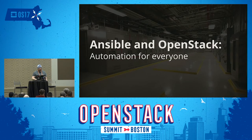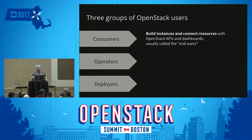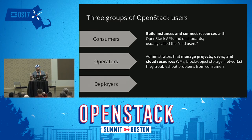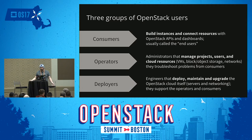So automation for everyone. We're going to talk about three groups of users: consumers, operators, and deployers. Consumers basically build instances and connect resources with OpenStack APIs and dashboards — usually called end users. Operators — I would probably classify myself as one — manage the cloud resources for you: rack new servers to expand compute, add Ceph capacity for storage, and so on. And then there are deployers — the people who actually maintain, deploy, and upgrade OpenStack over the long haul.